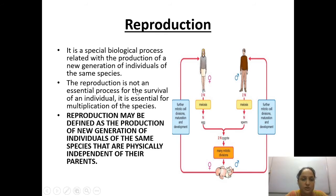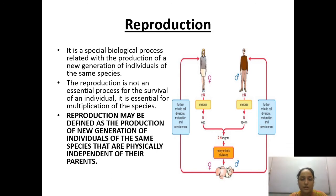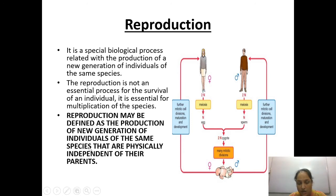Reproduction is not an essential process for the survival of an individual; it is essential for the multiplication of the species. Reproduction may be defined as the production of new individuals of the same species, because whenever we talk about reproduction, we are talking about a particular species.